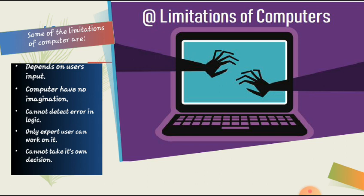Number one. It depends on user's input. Earlier, we have discussed in the accuracy of computer as well. That computer depends on the input. The processing is done by the computer. Computer always depends on the input. If the input is correct, the output is correct. But, if the input is incorrect, the output will be always incorrect.